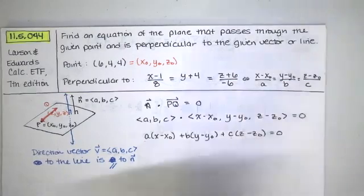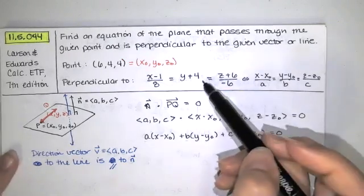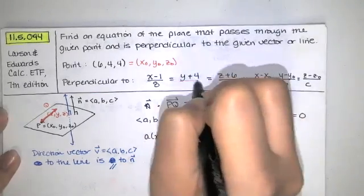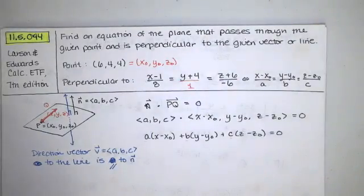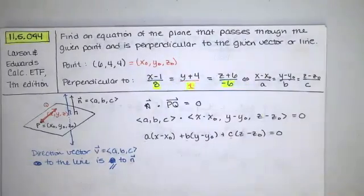And a, b, and c, the components of that direction vector to the line in the denominator. Now this y plus 4 doesn't have anything under it, so we can just write an implied 1 there. And then we see that a, b, and c would have to be 8, 1, and negative 6.